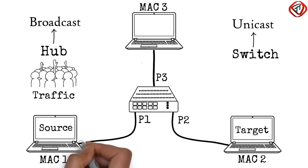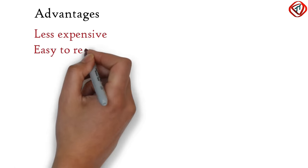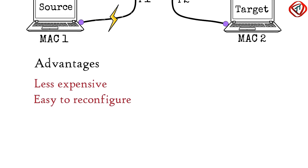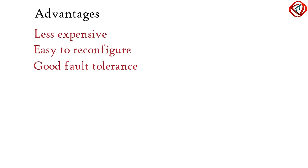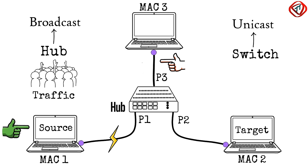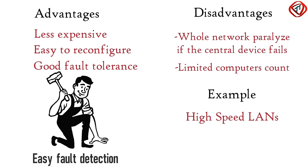In star topology, only one input-output port and one cable is needed for each device to connect to several devices, making it less expensive than mesh topology. It is also easy to reconfigure, as we can add or remove devices simply by connecting or disconnecting one cable. If one cable fails, only one communication link goes down, not the entire network, so star topology has good fault tolerance. However, if the central device goes down, the whole network is paralyzed. Also, the number of computers in the network is limited by the number of ports in the central device. An example of star topology is high-speed LAN.